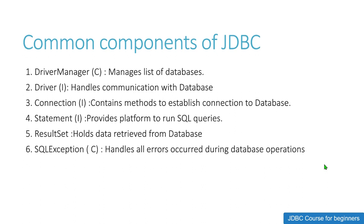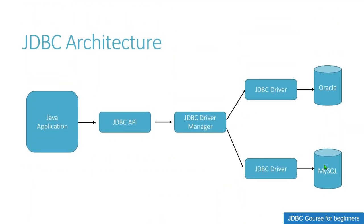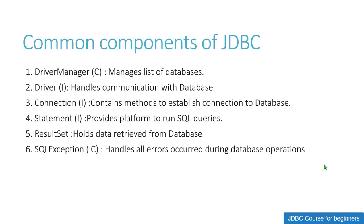The third component is Connection, which is also an interface. This Connection interface contains the methods to establish the connection with the database. We have our Java application, we have the database, and we have the driver — but we need some mechanism to connect all these things with each other. So Connection is the interface responsible for connecting to the database.